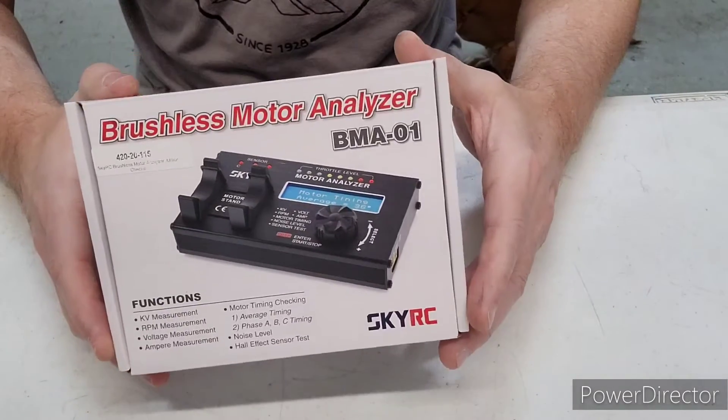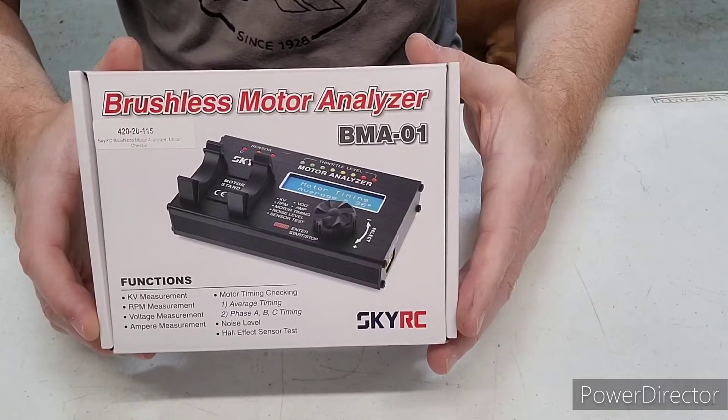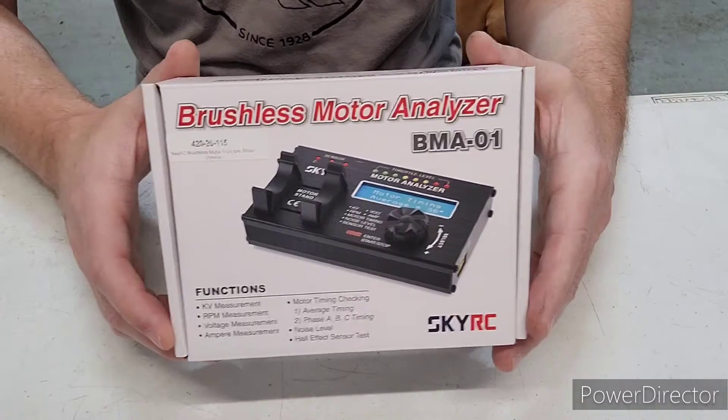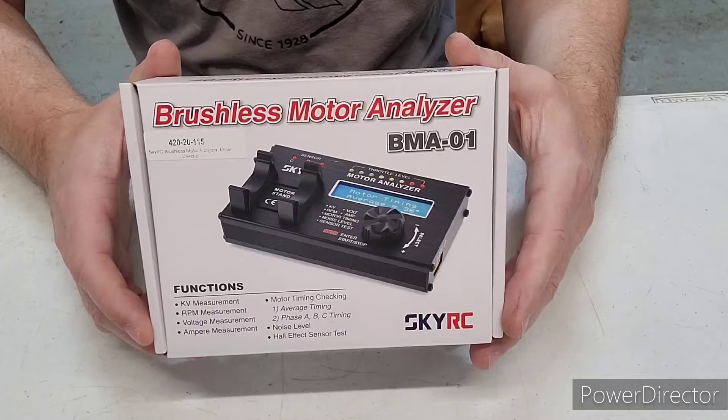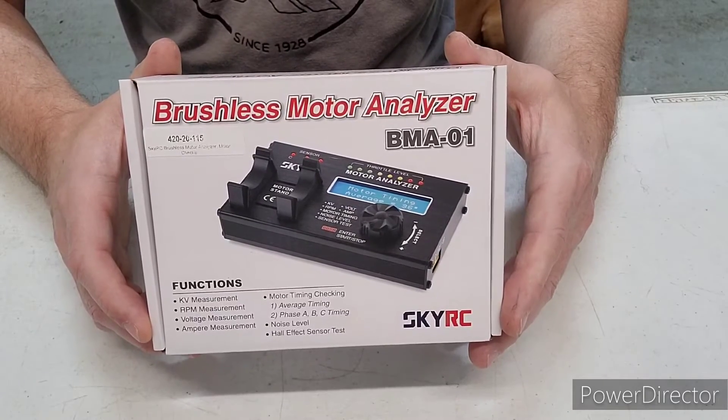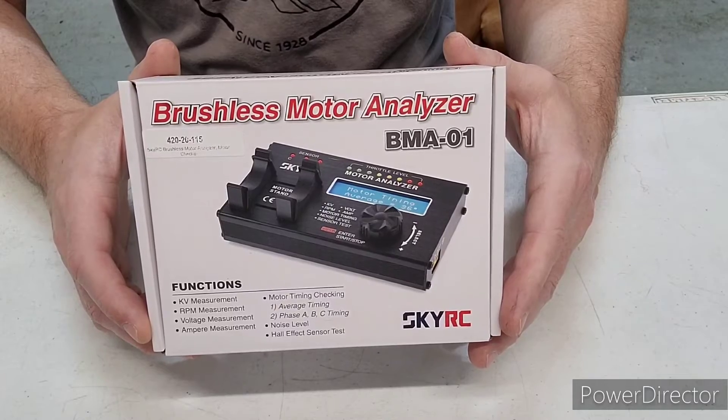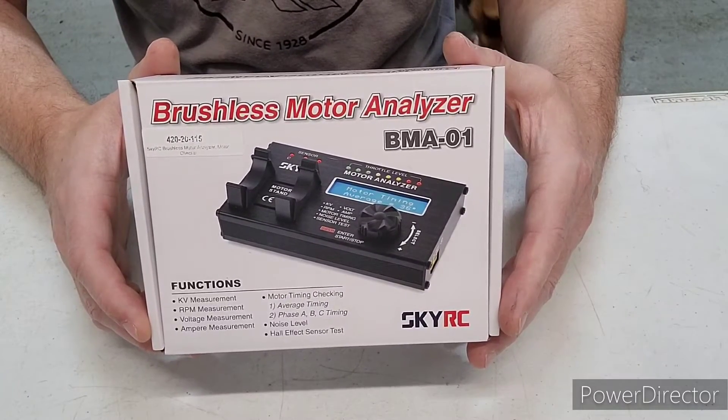So I will be using this SkyRC brushless motor analyzer. And there's really three ways you can tune a brushless motor. You can use an amp meter and some people will adjust the end bell timing until they hit six amps. And if that's all you have, that's a good start.